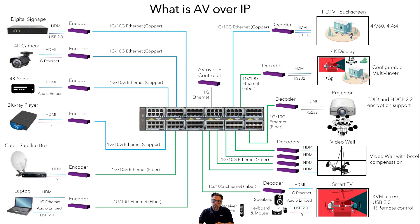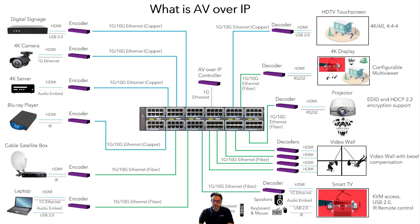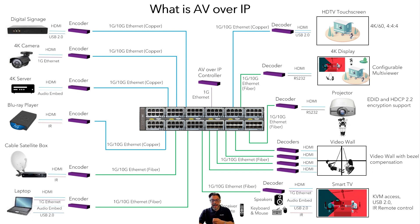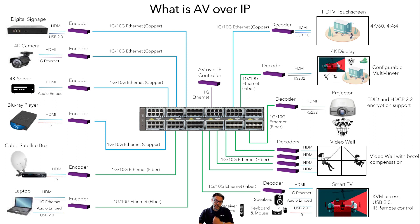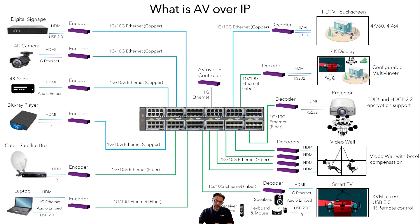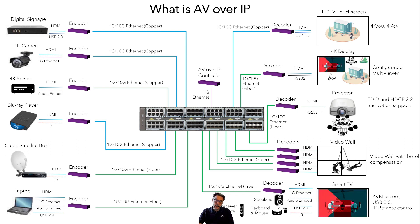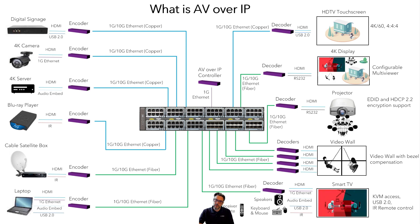All of this is modular, so you can add more encoders and decoders as needed at any time. At the center of AV over IP, you have the Ethernet switch, and it has to work — because if not, that's the entire AV over IP experience that can be ruined.